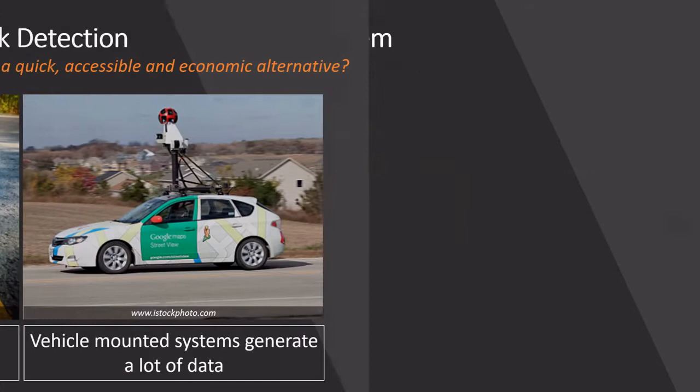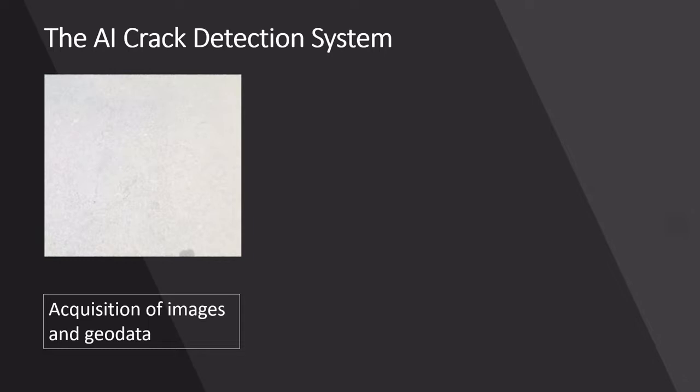The AI Crack Detection System consists of three steps: acquisition of images and geodata, training AIs for crack detection, and image geotagging.